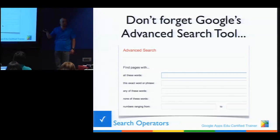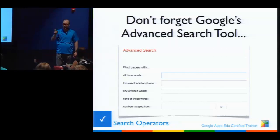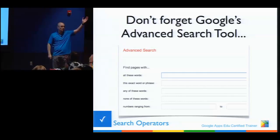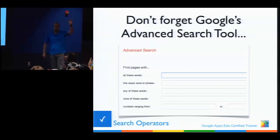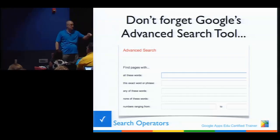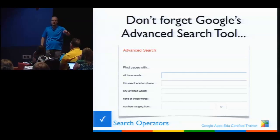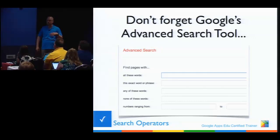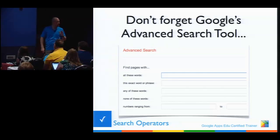Don't forget Google's advanced search tool. All the stuff we typed — like 'San Antonio' or 'spur -basketball' — you can do in the advanced search form, which just gives you free-form fields. That might be a nice place to start with students, but once you know the operators it's quicker to type them directly. How many of you use keyboard shortcuts? How many use Gmail shortcuts — like E to archive? That speeds up workflow enormously.